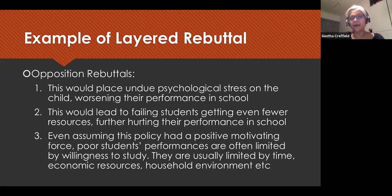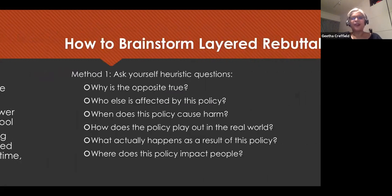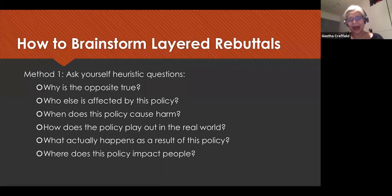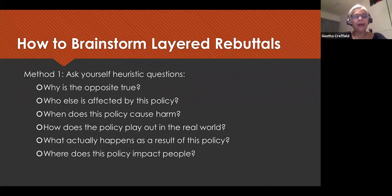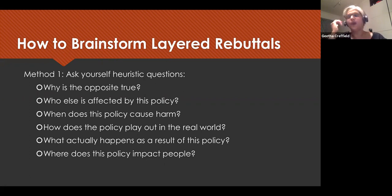The example of layered rebuttal is about not just stopping, not repeating the same thing, but having statements that deepen the perception of why the argument from the other side won't work. Now, how do we get to this part of brainstorming to layer rebuttals? I'm going to suggest some methodologies, because it's always quite difficult when sitting in an impromptu or prepared motion situation thinking about what ways to consider rebuttal.